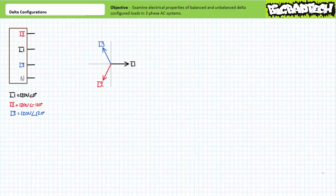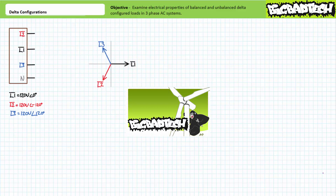Good day and welcome to Big Bad Tech. I'm your instructor Jim Pytel. Today's topic of discussion is the analysis of delta configurations in three-phase AC circuits. Our objective is to examine the electrical properties of balanced and unbalanced delta configured loads in three-phase AC circuits. This lecture operates under the presumption that the viewer has some familiarity with three-phase AC and Y-configured loads, as illustrated in the introduction of three-phase AC and balanced and unbalanced Y-configurations lectures, all available at the Big Bad Tech channel.